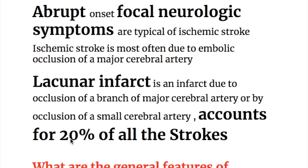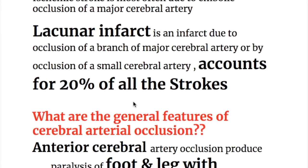Clinical features of stroke: abrupt-onset focal neurologic symptoms are typical of ischemic stroke, which is most often due to embolic occlusion of a major cerebral artery. A lacunar infarct is an infarct due to occlusion of a branch of a major cerebral artery or occlusion of a small cerebral artery, accounting for 20% of all strokes.